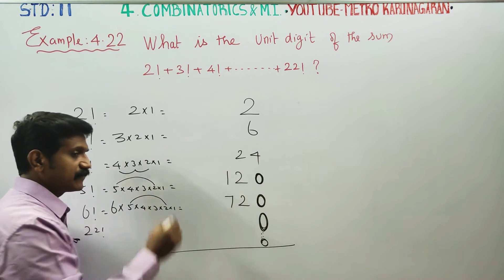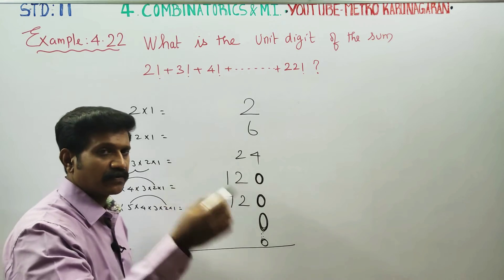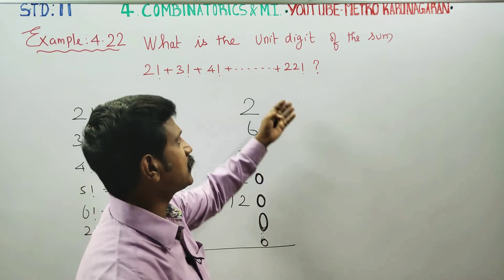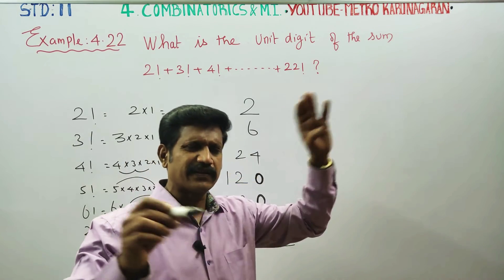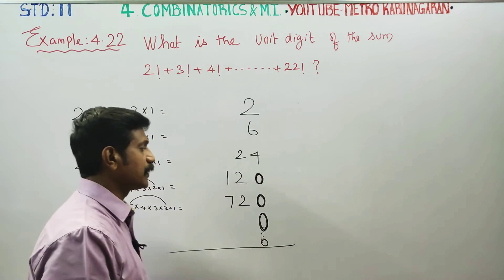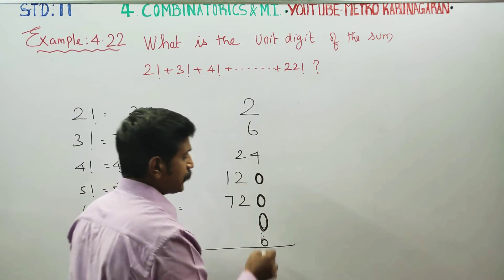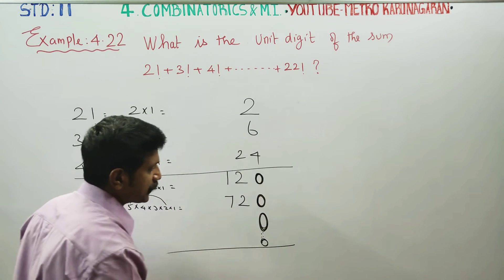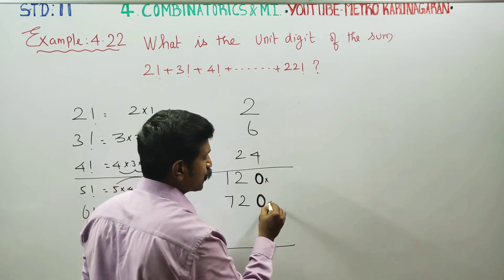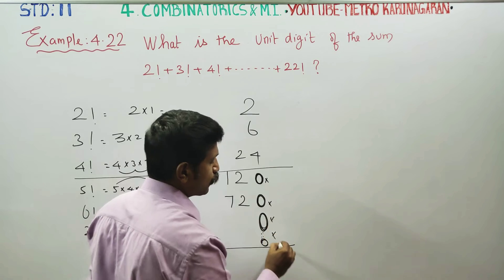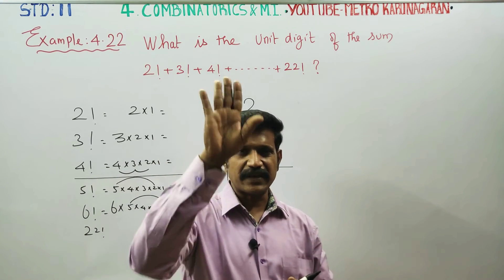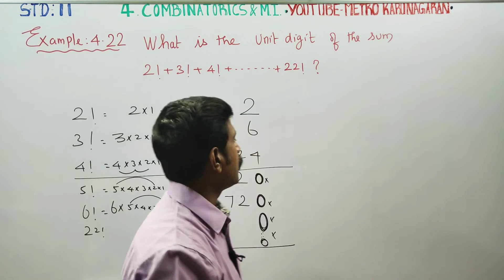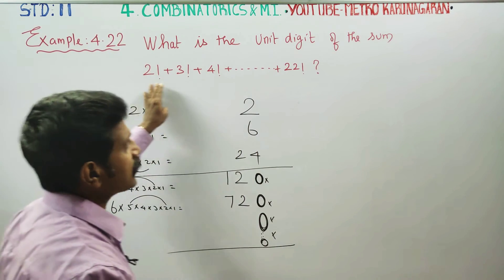So, 6 factorial, 7 factorial, 8 factorial, 9 factorial, 10 factorial, 11, 12, 13, 14, 15, 16, 17, 18, 19, 21, 22 — all the way, unit digit is 0. The sum of all these 0s will be 0.